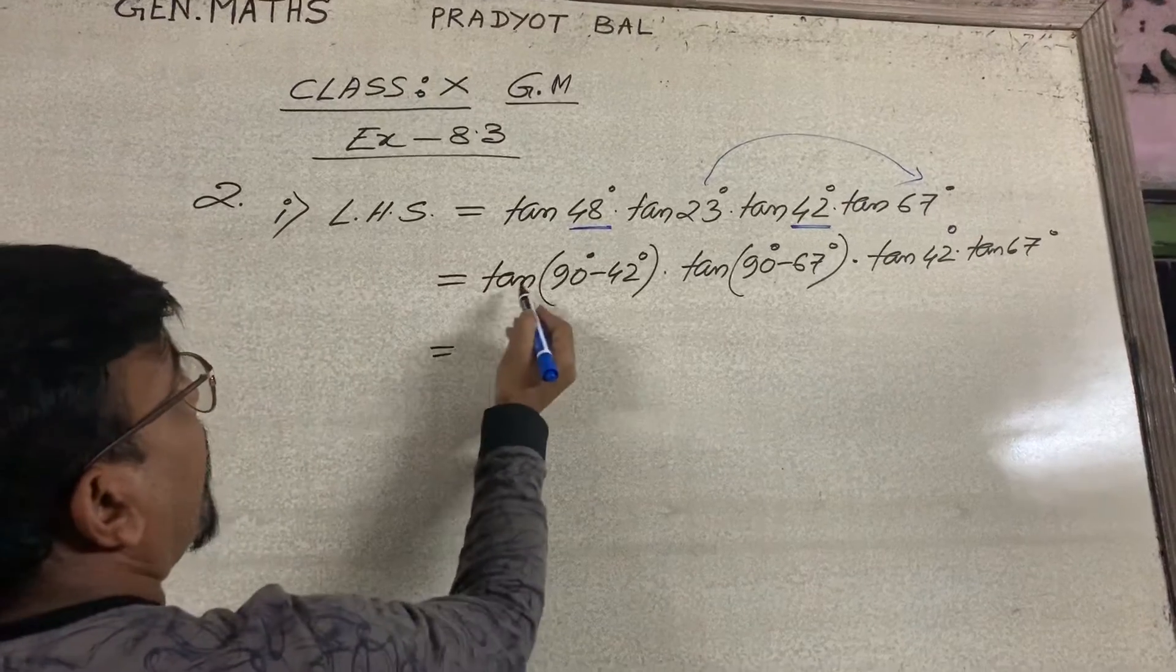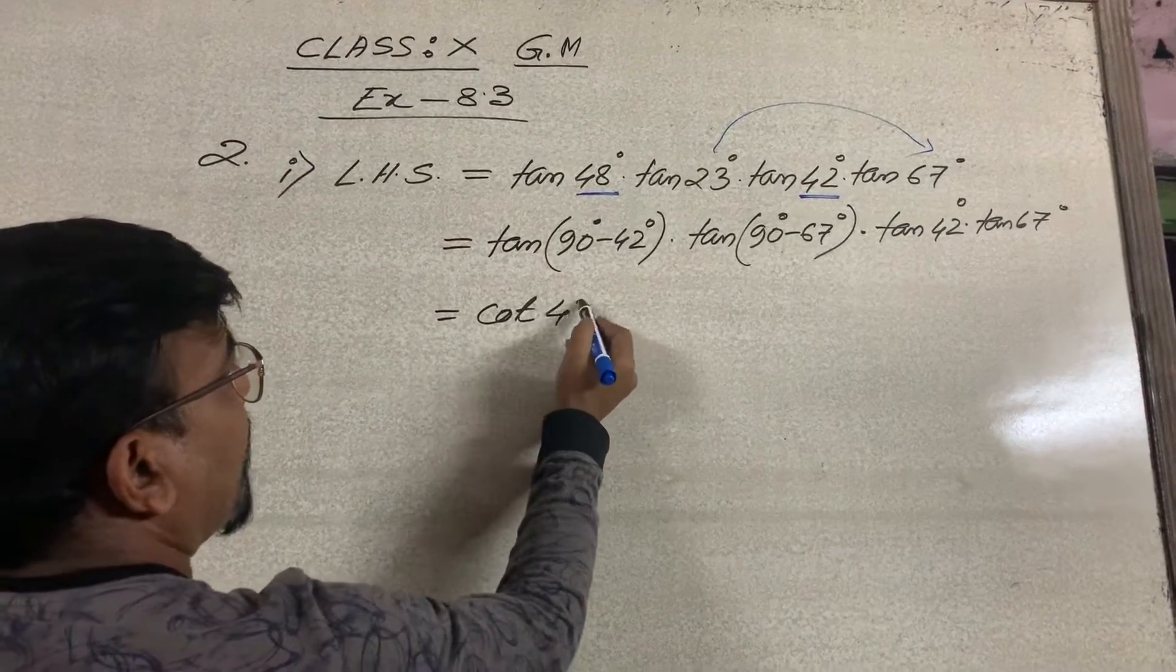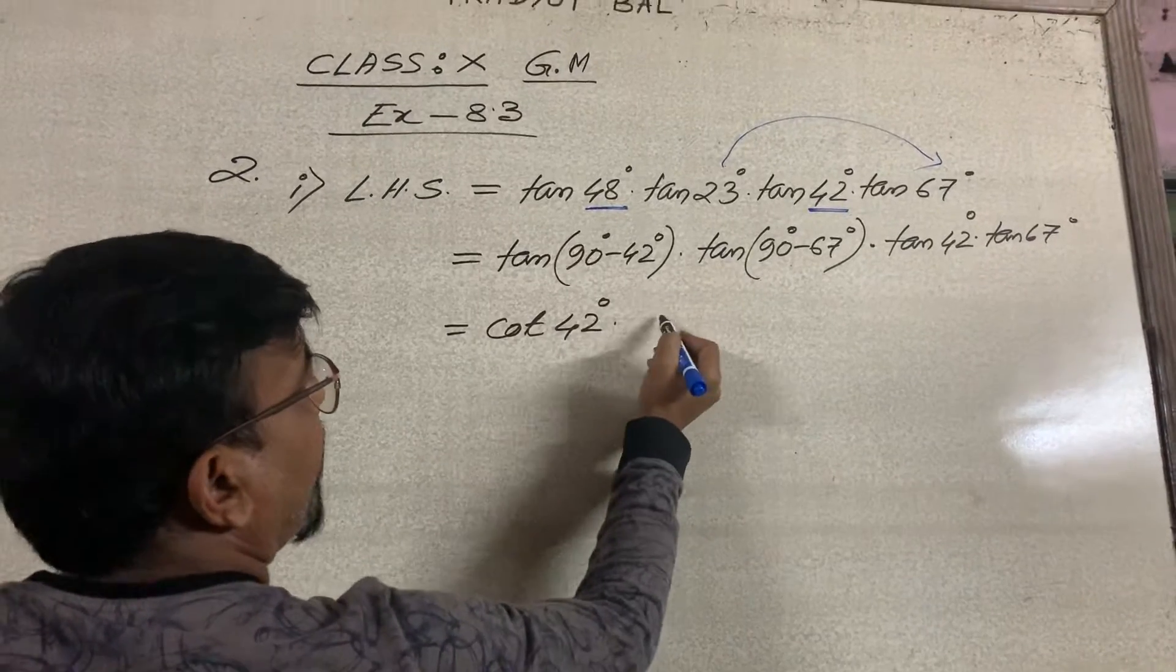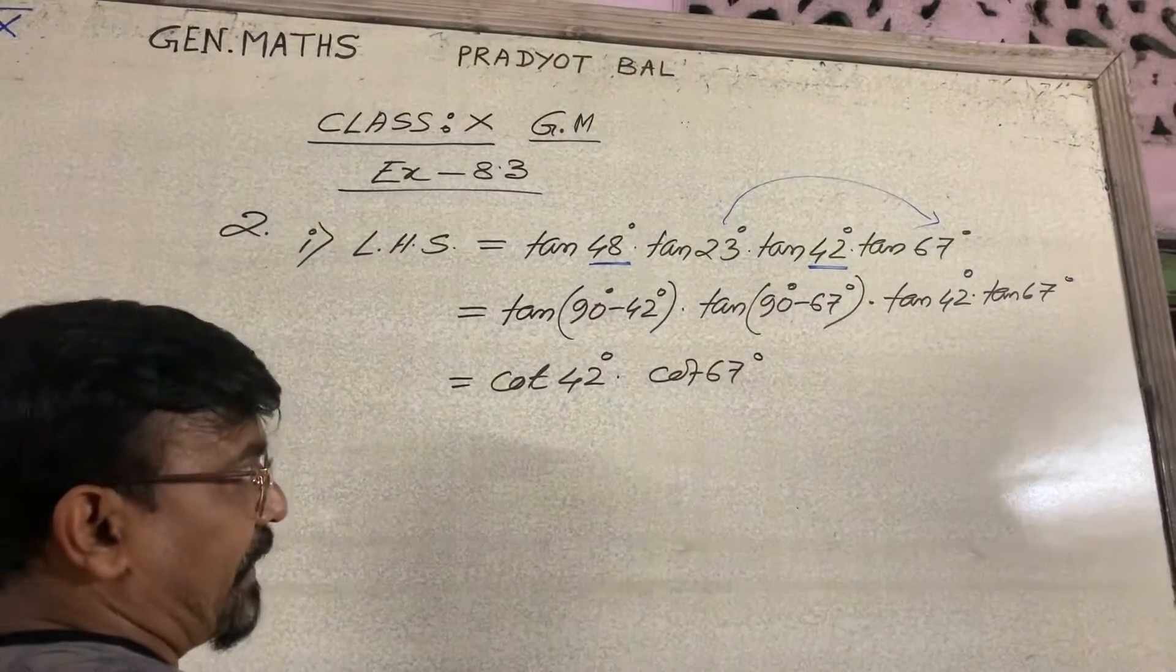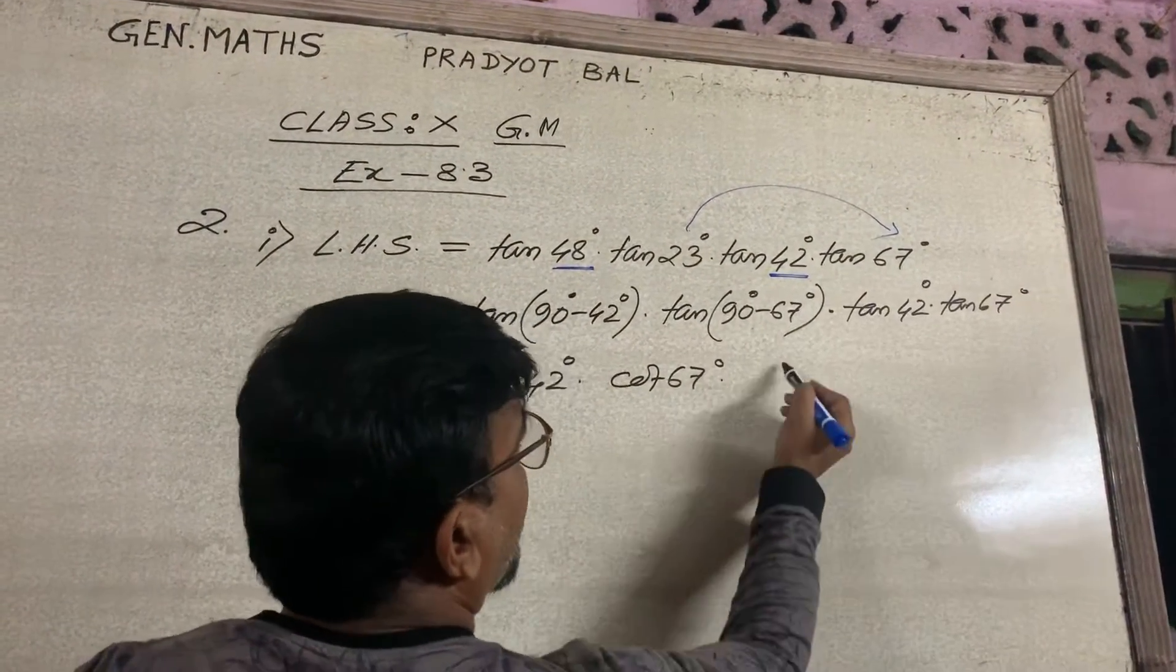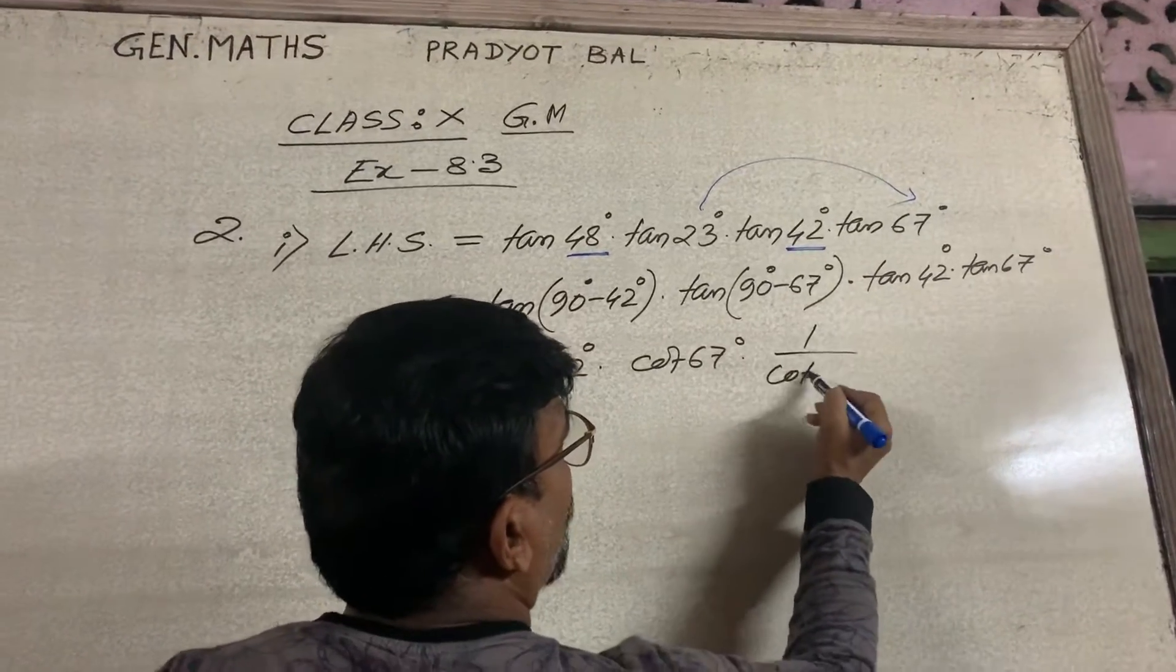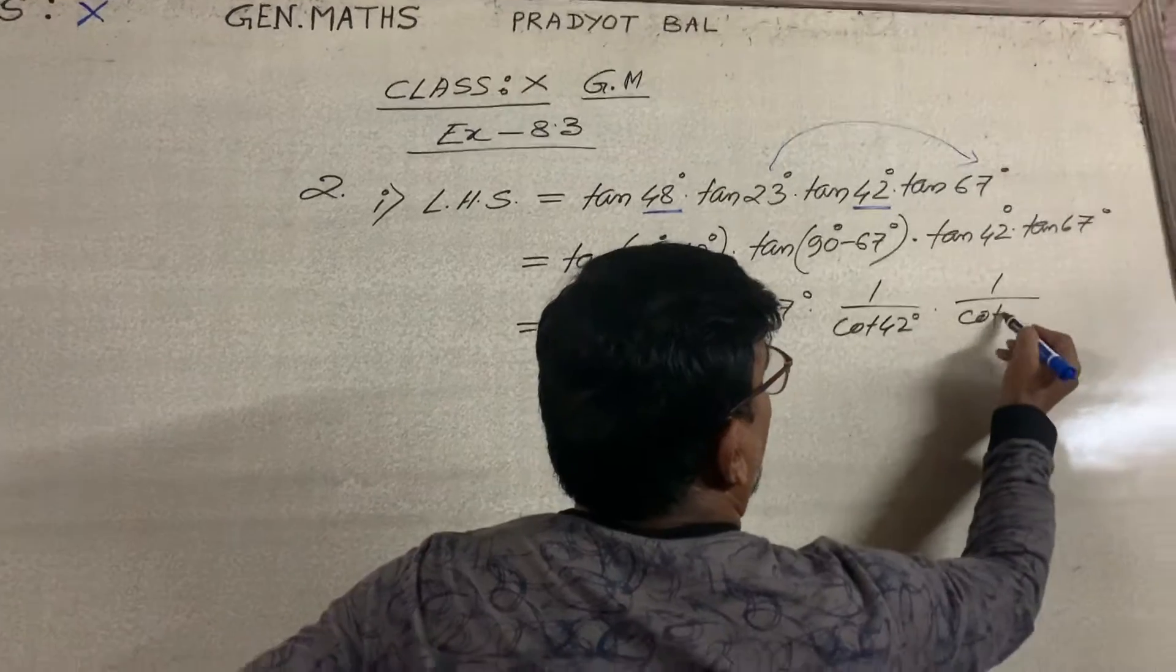Now, tan 90 degree minus theta is cot theta. So we are getting cot 42 degree and cot 67 degree. Again, we know tan theta is 1 by cot theta.